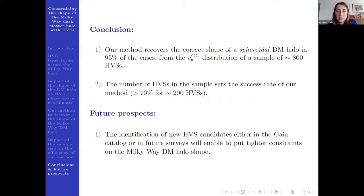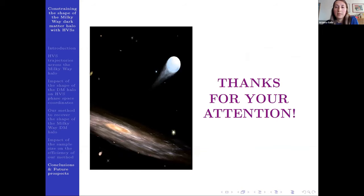So to conclude, we have that our method recovers the correct shape of a spheroidal dark matter halo in 95% of cases, starting from the V_theta distribution of a sample of around 800 stars. The number of HVS in the sample sets the success rate of our method, of course. But looking at future prospects, we have that the identification of new HVS candidates either in the Gaia catalog or in future surveys will enable us to put tighter constraints on the Milky Way dark matter halo shape. Thanks for your attention.